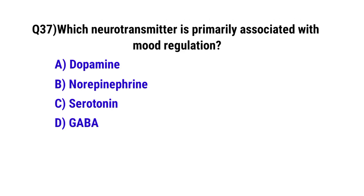Question number 37. Which neurotransmitter is primarily associated with mood regulation? The correct option is C: serotonin.